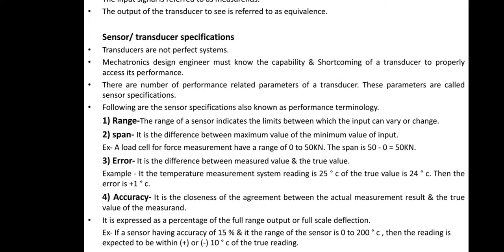Example is given: if the sensor is having accuracy 15 percent and the range of the sensor is 0 to 200 degree Celsius, then the reading is expected within plus or minus 10 degree Celsius of the true reading.